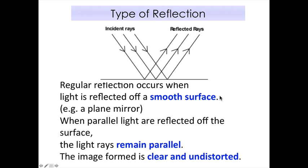There are two types of reflection, depending on the type of surface. The first is called regular reflection, which occurs on a smooth surface — like a mirror, a window, or your phone screen. Parallel light rays hitting a smooth surface remain parallel after reflection, so the image formed is clear and undistorted, and you can see your reflection. If you don't understand, replay this part or bring questions to class.